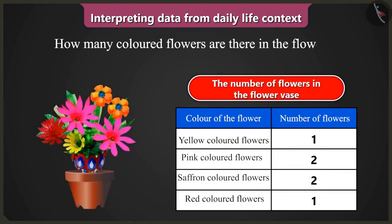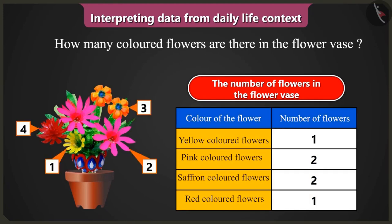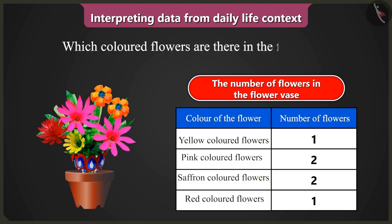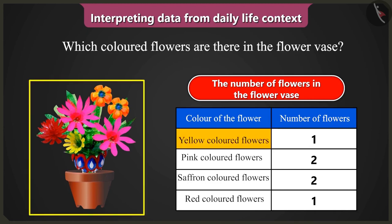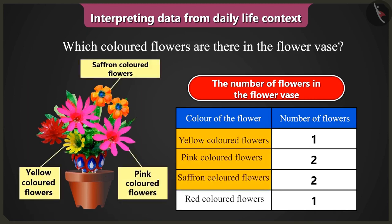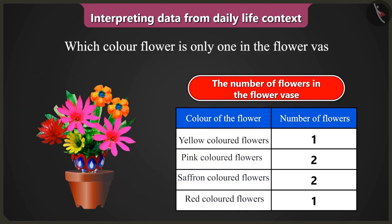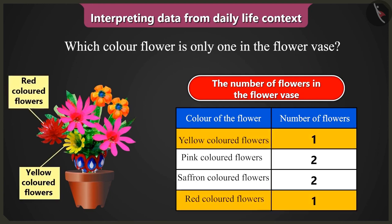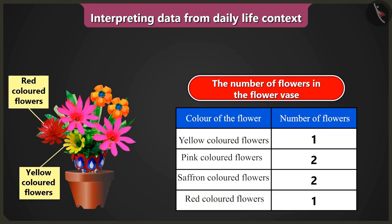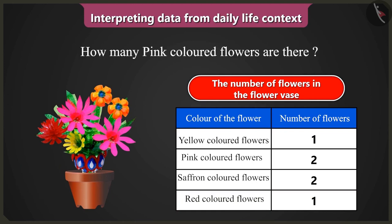So tell me, how many colored flowers are there in the flower vase? The table has data about flowers of four colors. Which colored flowers are there in the flower vase? There are yellow, pink, saffron, and red colored flowers in the flower vase. Which color flower is only one in the flower vase? Yellow and red colored flowers are one each. How many pink colored flowers are there? There are two pink colored flowers.